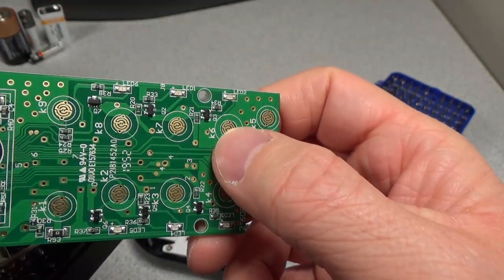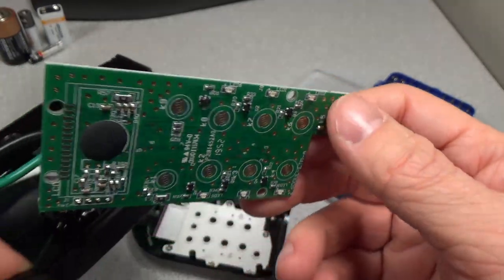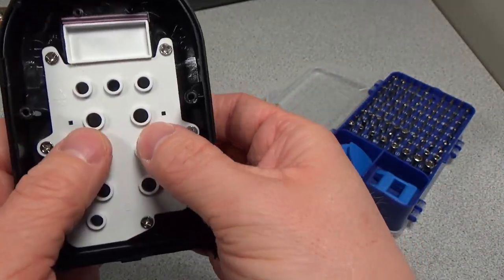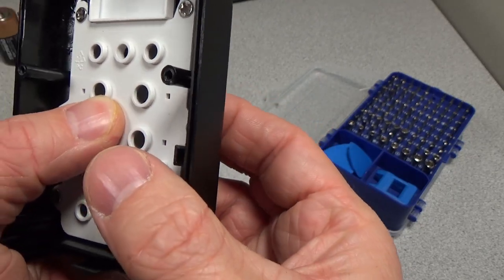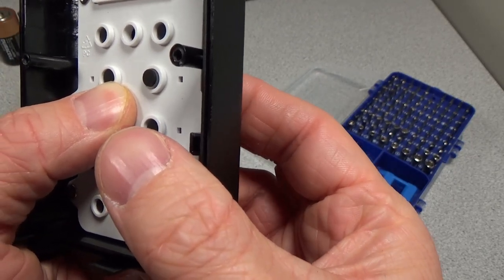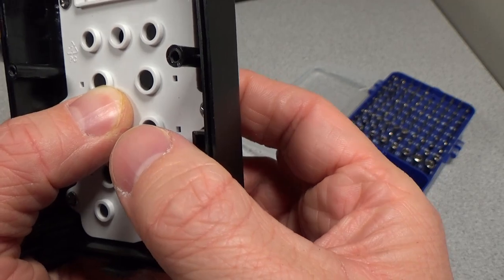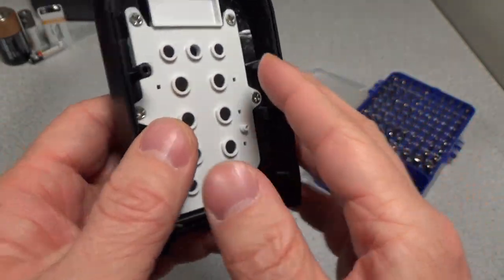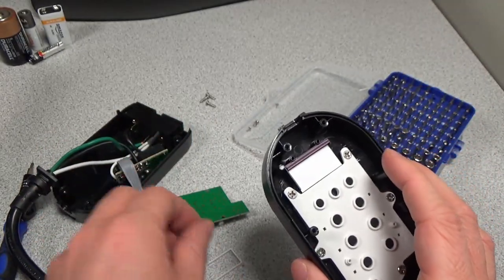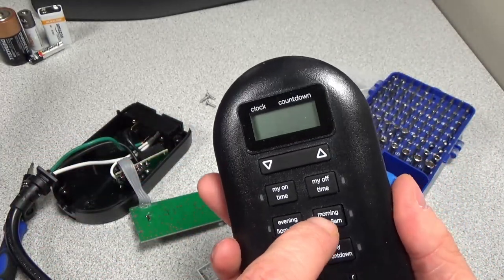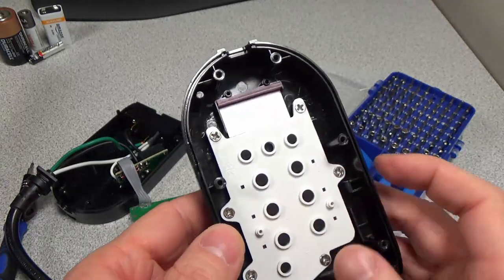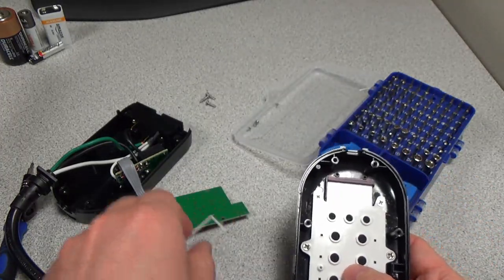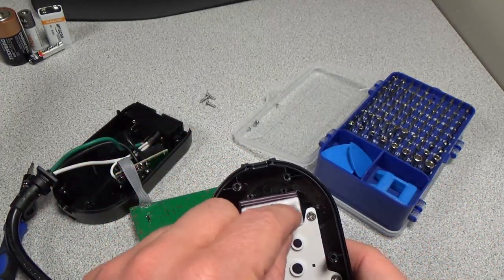These little contact pads are actually the switches which make contact with these little carbon plates here. When you push one of these in, you can see that little carbon piece right there pushes out and makes contact with the PCB and that closes the switch. All of that tactile feel entirely comes from this rubber mold.